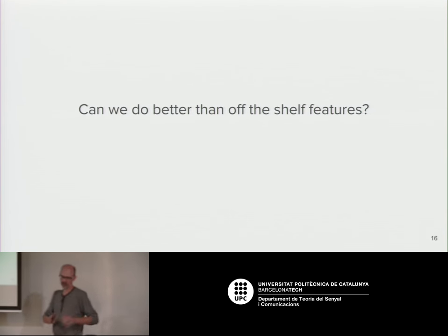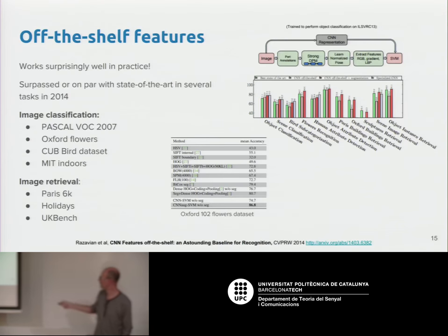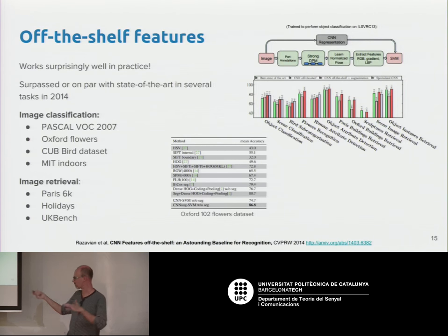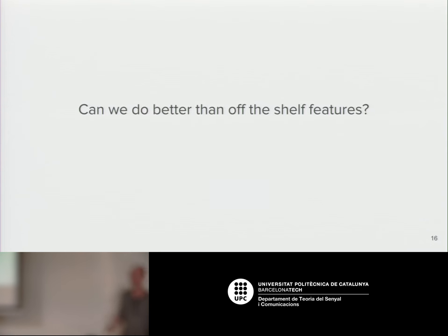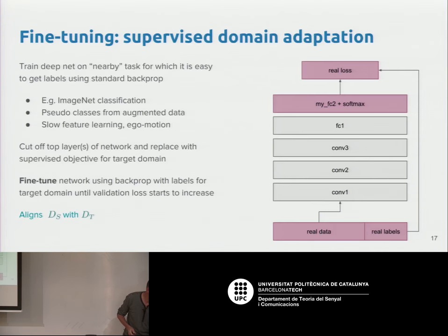The idea is that we can take a pre-trained representation for our problem. They achieved around 76 to 80% accuracy. Can we obtain something better? Yes — so the first technique for improving upon this is called fine-tuning.